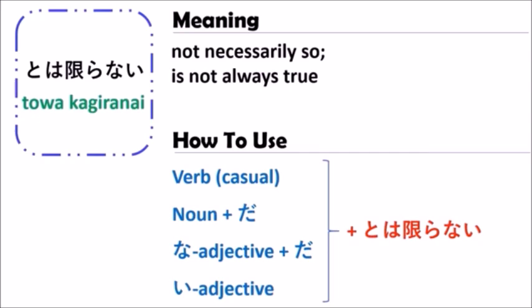Sometimes with とは限らない, you can also use とは限りません in the same line — とは限りません has the same meaning. So when you use とは限らない, it has the meaning of 'not necessarily so' or 'it's not always true.'